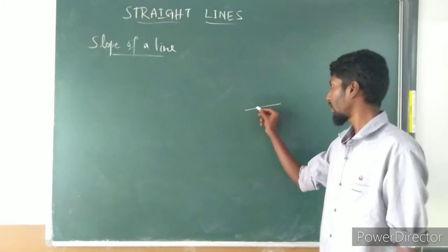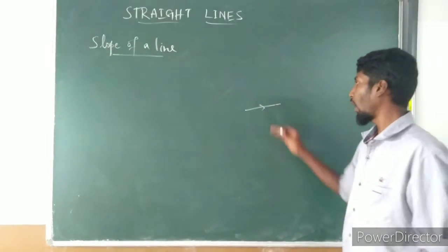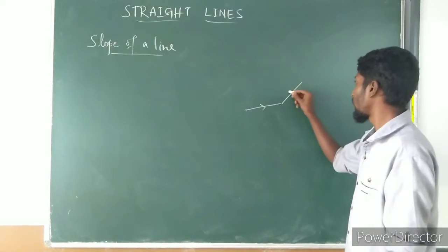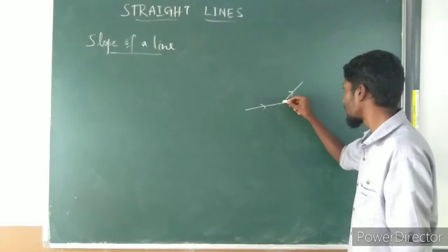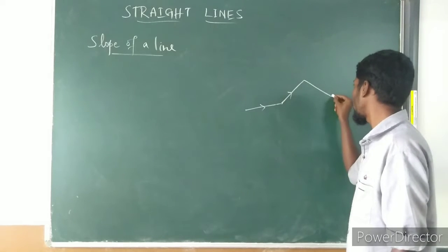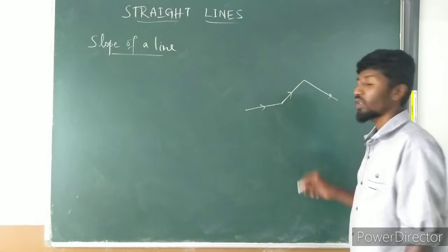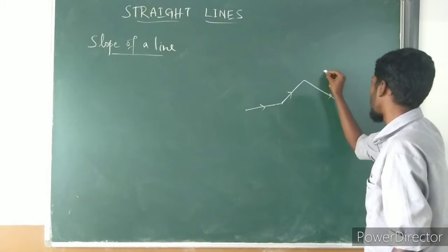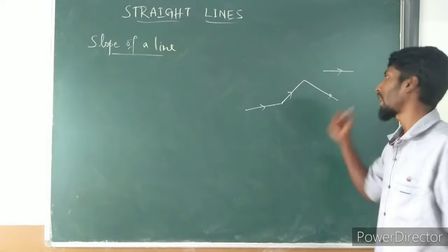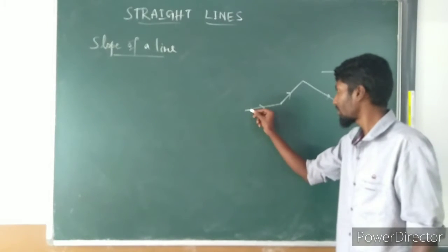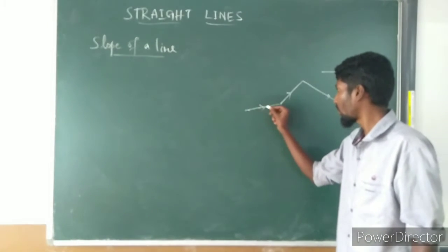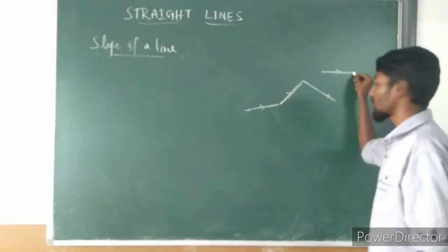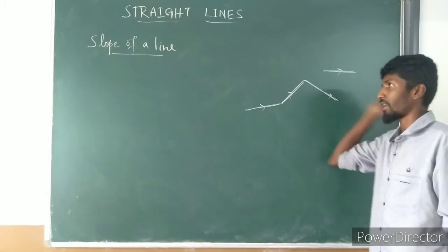We can describe the direction and how much a line is steep. If I take one line like this, we can find the direction and how steep it is. Or take another line — we can describe its direction and steepness too. You can see here: for one line the steepness is moderate, for another the steepness is high, and for a line that is nearly flat there is almost no steepness — it is just a straight line.